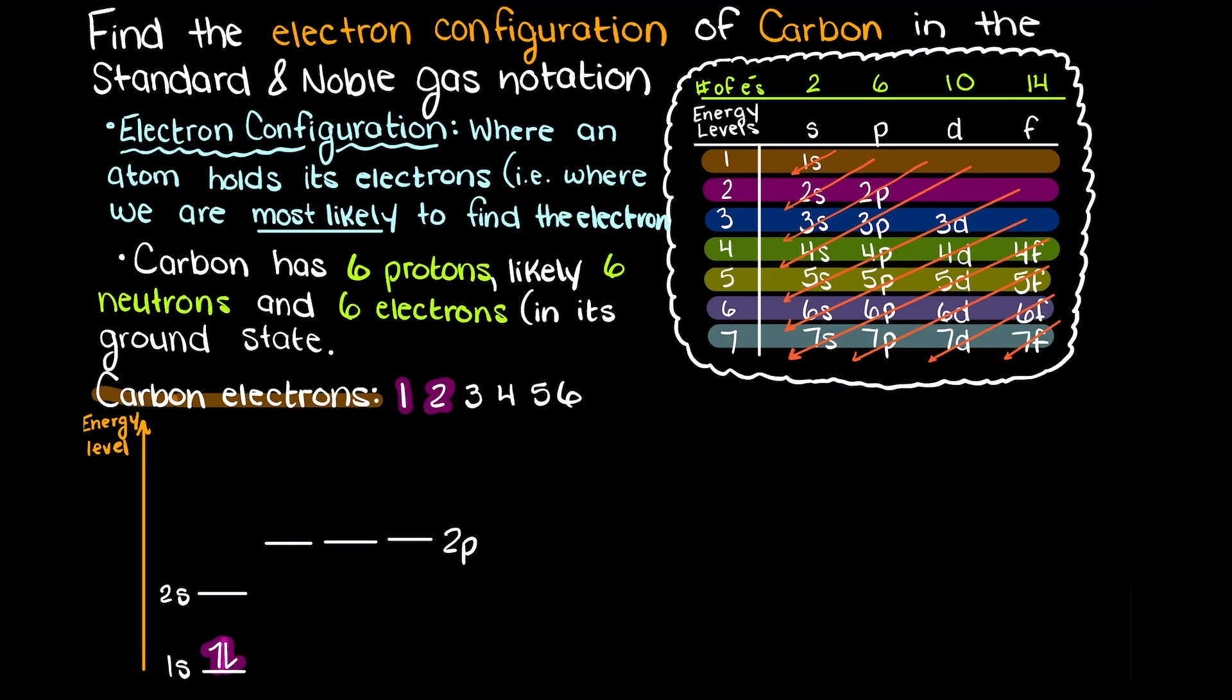Now, following our energy level diagram, we have 2s which again can take 2 electrons. Lastly, we are left with 2 electrons to place.